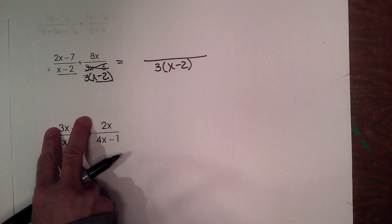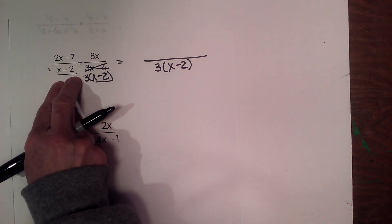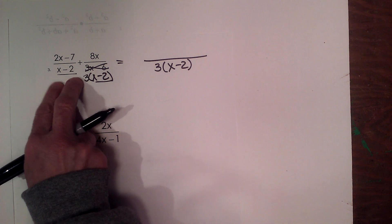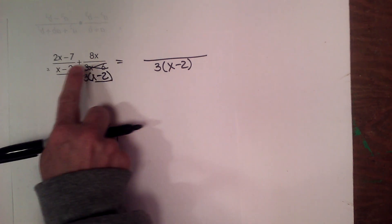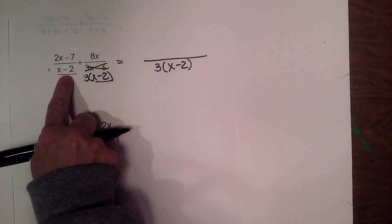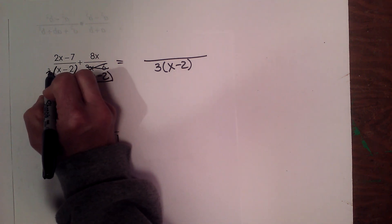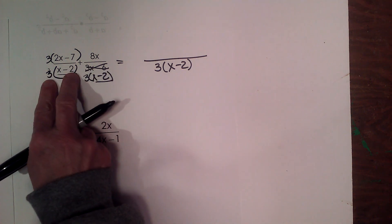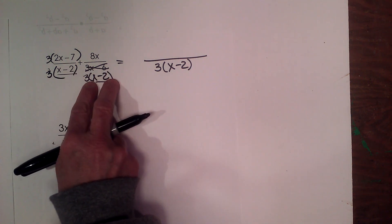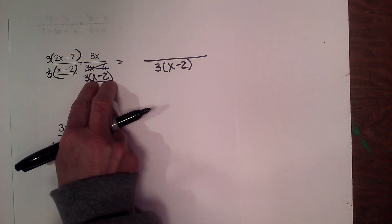Now what I'm going to do is take each expression and see which term is missing. When I compare these two denominators, this one is missing a 3. So I need to multiply this by 3 on top and 3 on the bottom so I can then add my two expressions together.